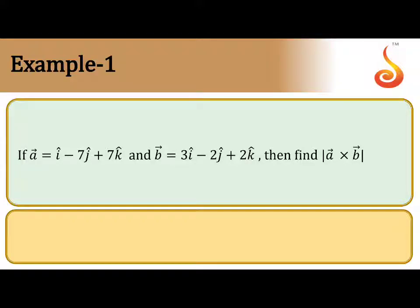Given vectors a bar equals i minus 7j plus 7k and b bar equals 3i minus 2j plus 2k, then find the magnitude of a bar cross b bar.